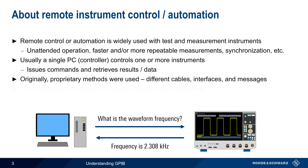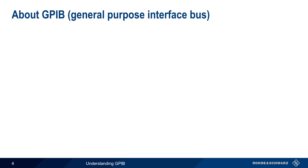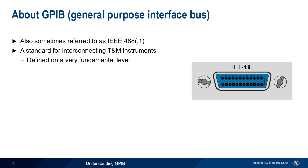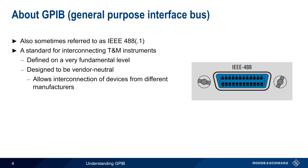The first standardized interface for test and measurement instruments was something called GPIB. GPIB stands for General Purpose Interface Bus, but you'll also see this sometimes referred to as IEEE 488. GPIB is a standard for interconnecting test and measurement instruments, and it's defined on a very fundamental physical and electrical level. However, GPIB was designed to be vendor or manufacturer neutral — that is, it was intended to allow for the interconnection of devices from different manufacturers.